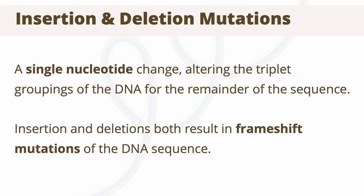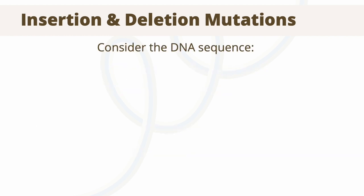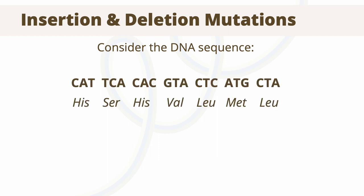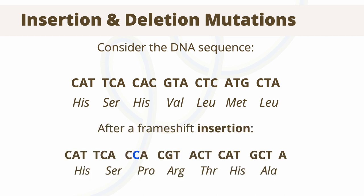The remaining two types of point mutations include insertions and deletions. Insertion involves the addition of a single nucleotide into the DNA sequence, while deletion involves the removal of a nucleotide. Unlike substitution mutations, both insertions and deletion mutations produce a frameshift, which is where the triplet grouping of the DNA is altered. Once a triplet is altered within a sequence, the remainder of the sequence will also be affected. In the insertion example, prior to the nucleotide insertion, the DNA sequence produced the amino acid sequence shown. After the addition of a C nucleotide to the third triplet, indicated by the blue, the triplet groupings changed for the rest of the sequence.